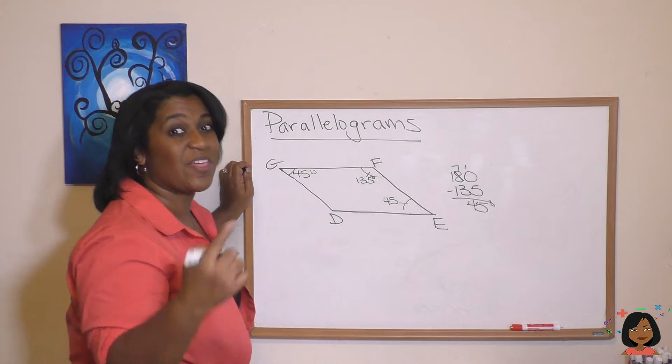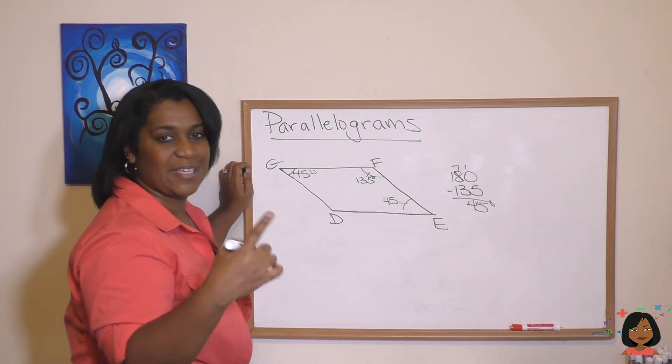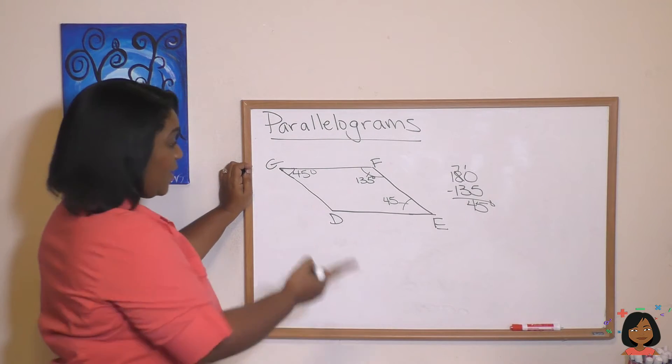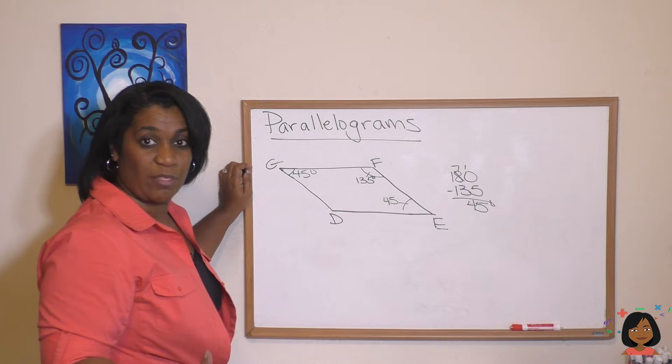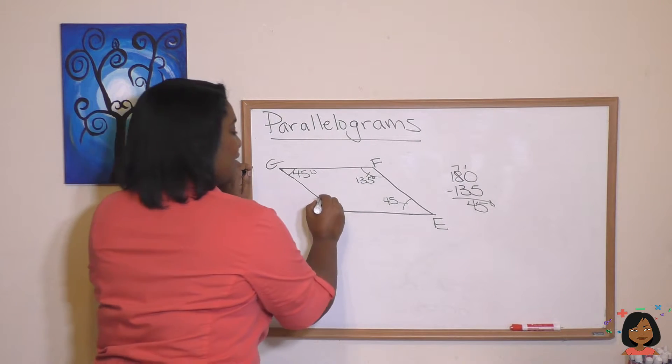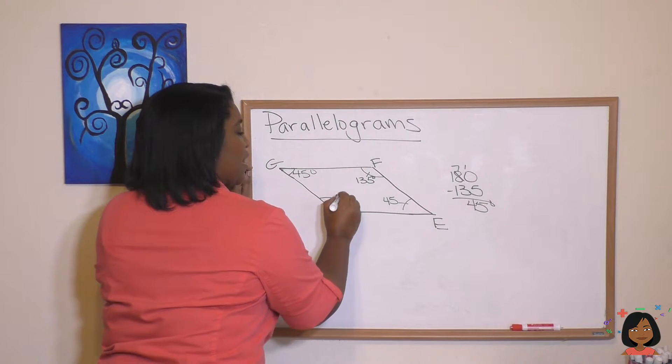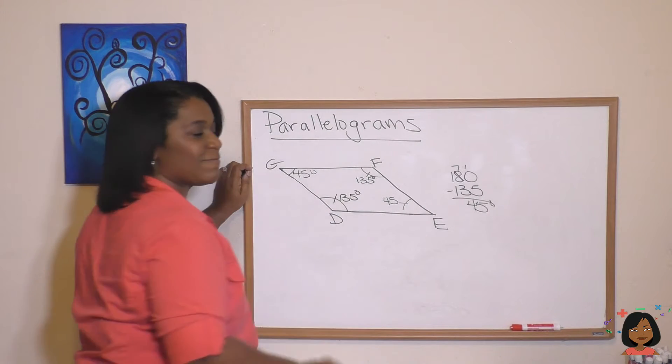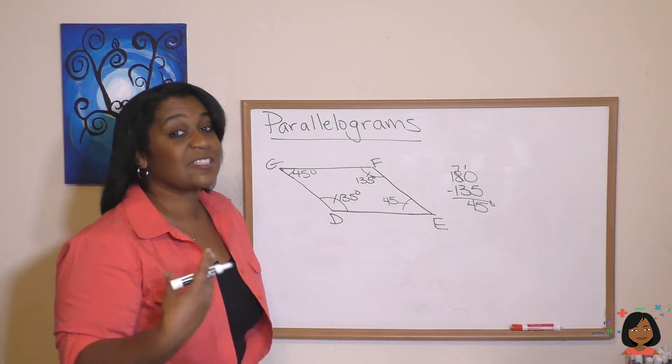What do we also know about parallelograms? The non-adjacent angle is equal to the angle. So angle F and angle D, they're both equal—they're opposite each other—and that tells us that angle D is 135 degrees. That's it, pretty simple. That's a nice little summary of the angles of a parallelogram.